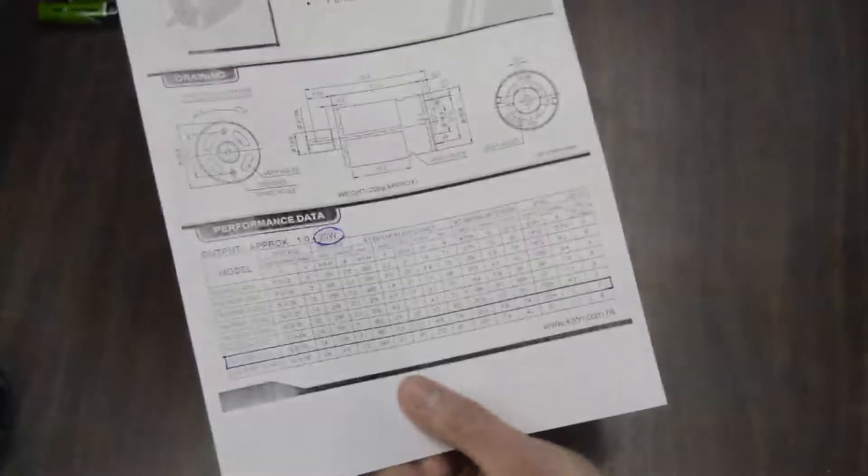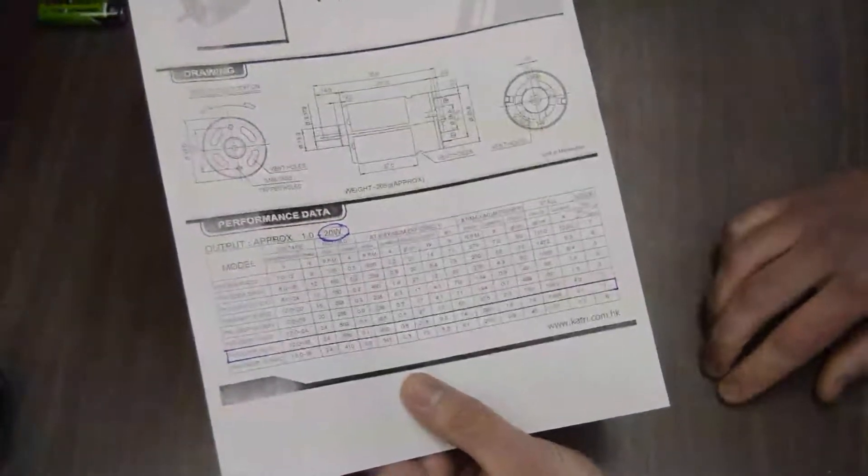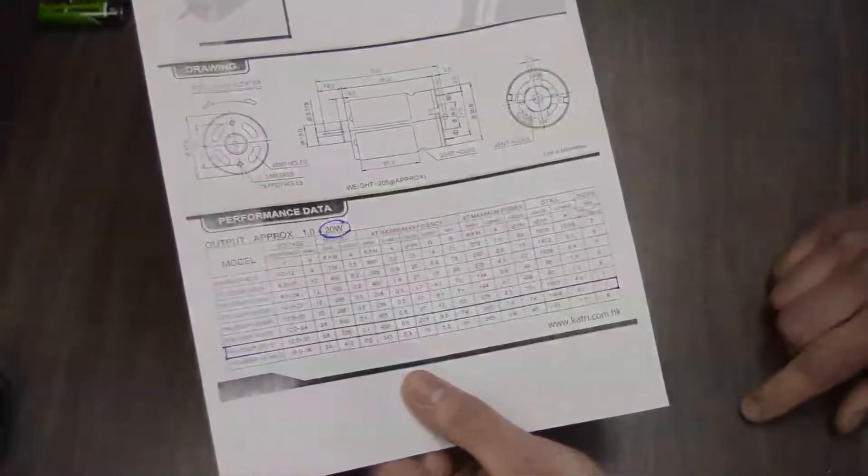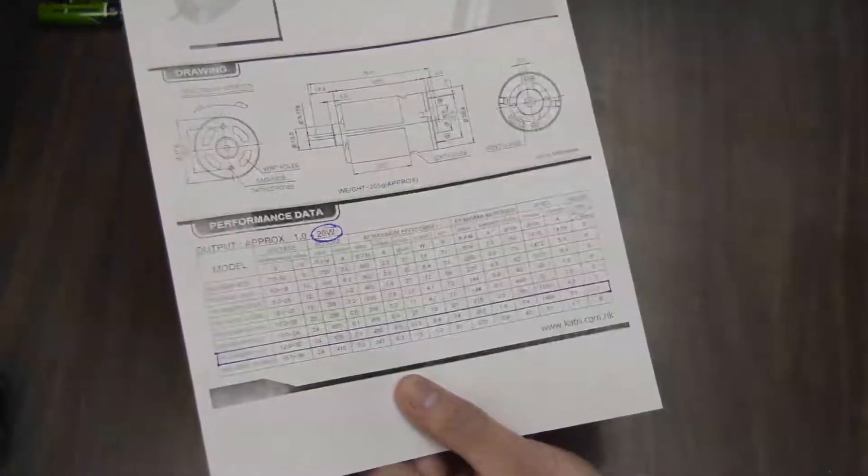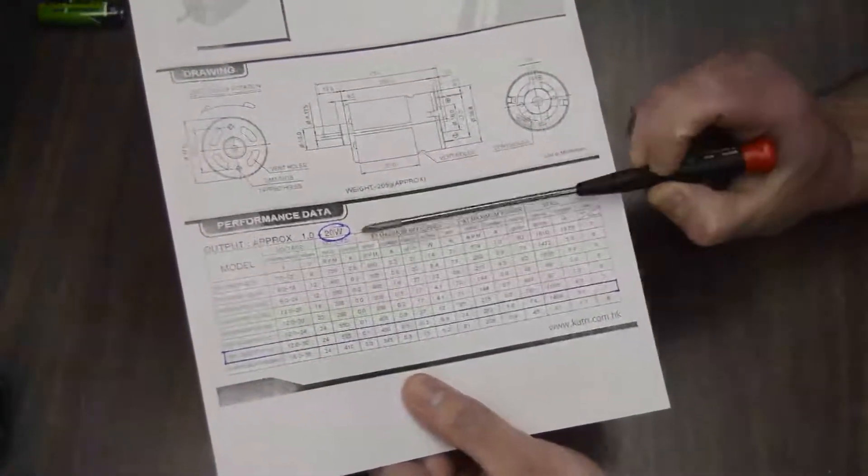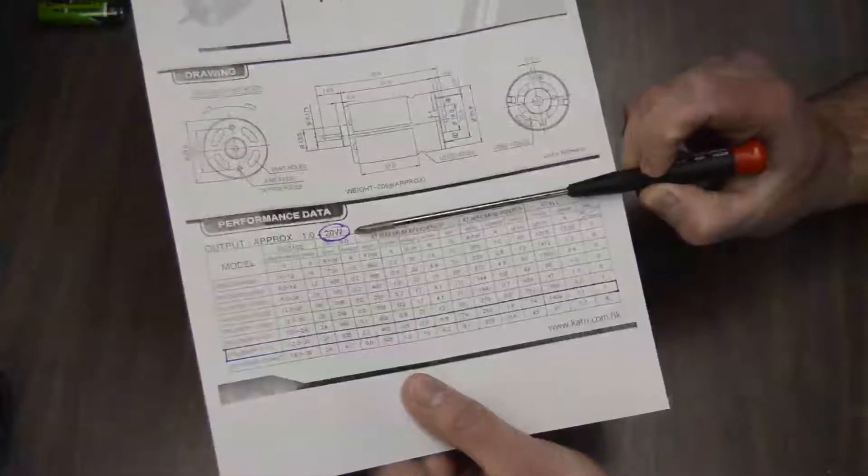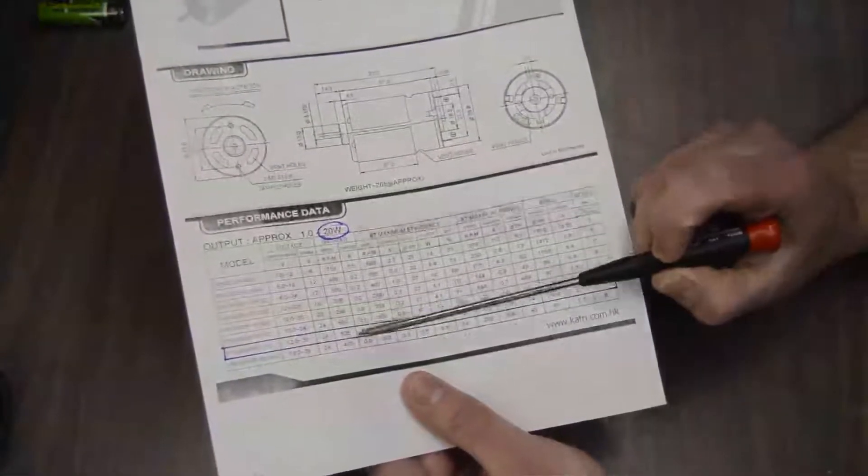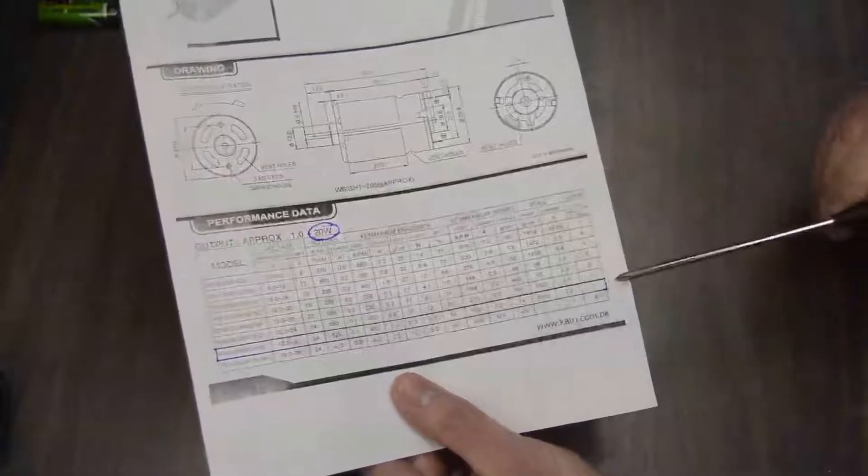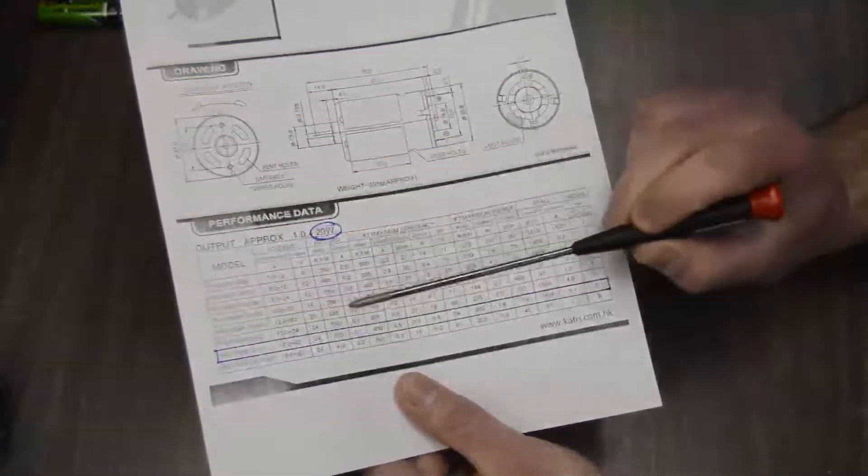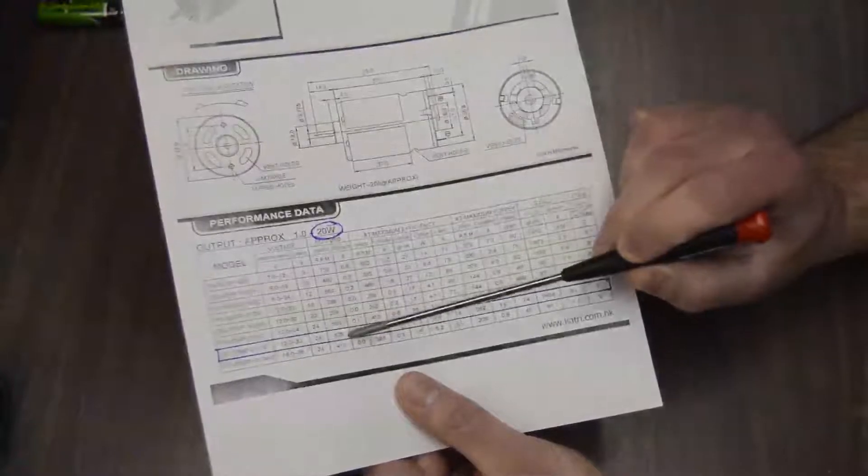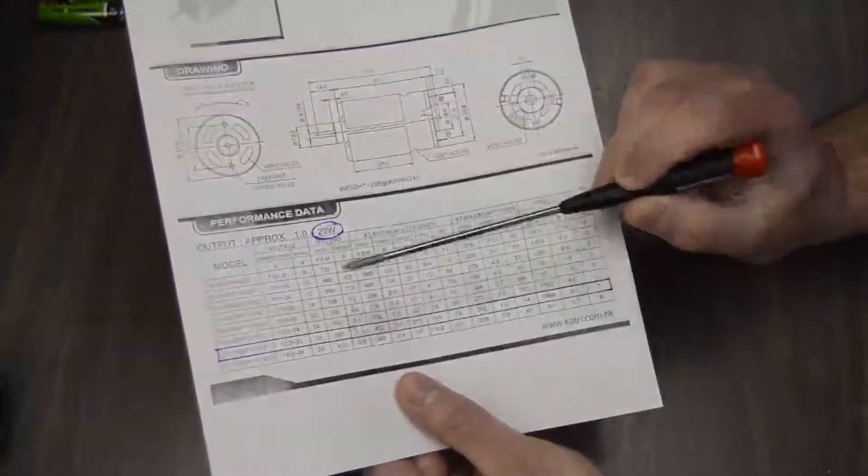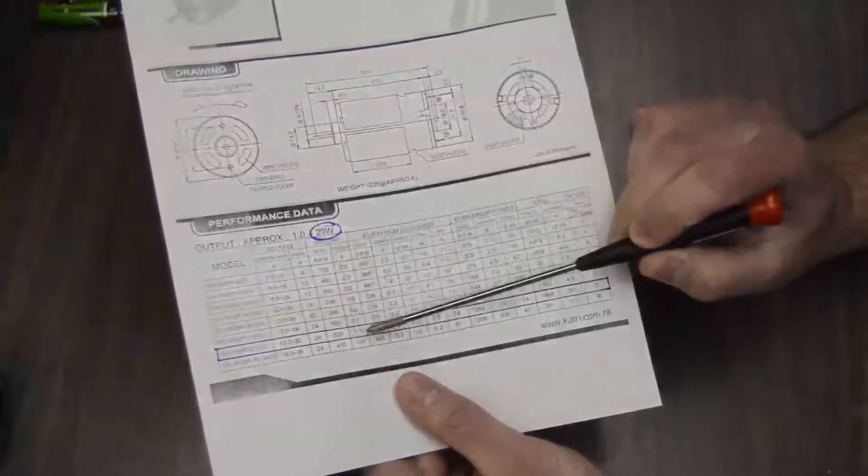So the motor itself comes from these people. And what's interesting is I was able to actually find the data sheet for this, and I believe I know where the manufacturer's claim of 20 watts came from, and I think it's right there. Approximate output power. The one in question is this one I've highlighted in blue down here. So it's alleging 24 volts, a no load speed of 525 RPM, and a current of 0.1 amp.